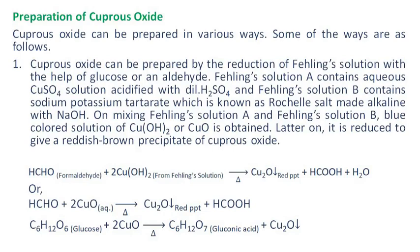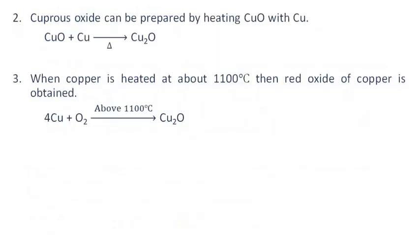a blue colored solution of copper hydroxide or cupric oxide is obtained. Later it is reduced to give a reddish brown precipitate of cuprous oxide. Cuprous oxide can also be prepared by heating cupric oxide with copper, as shown in the reaction.